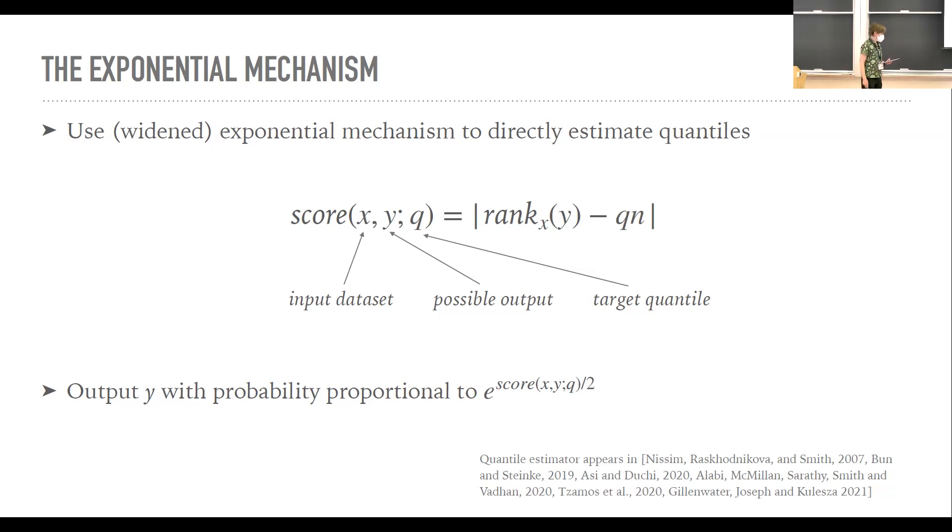So the exponential mechanism has been used for quantile estimation. I think it's in the original paper. So that's nothing new. But just to review, we first discretize the output space to some granularity. And then we take each possible output and we score it with the score function. And then we choose an output with probability proportional to e to the score. We do use a slightly widened version of the exponential mechanism, which just pushes that distribution out by a parameter theta. And the only reason why we do that is just it slightly better handles cases where the data is highly concentrated compared to the run of the mill mechanism.